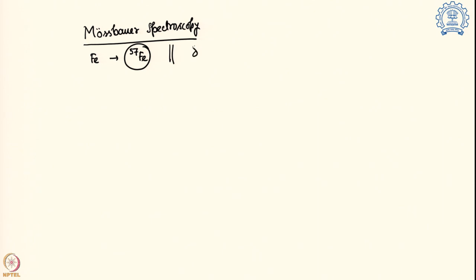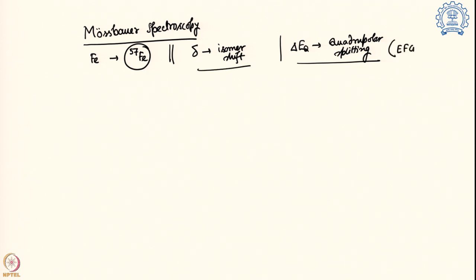We are going to talk about Mössbauer spectroscopy to differentiate different complexes, and most of the complexes will be iron-based because we are going to use the fact that iron-57 is a Mössbauer active isotope. The factors we are going to use are the delta value, which is the isomer shift directly correlated with the S electron density present inside the nuclei, and also the ΔEQ value, which is the quadrupolar splitting indicating a nonzero electric field gradient — reflecting asymmetry around the molecule.